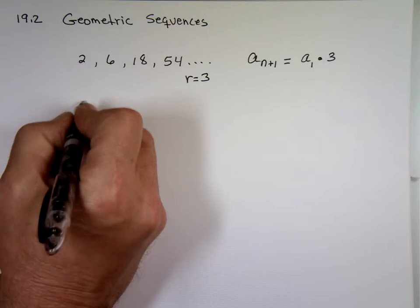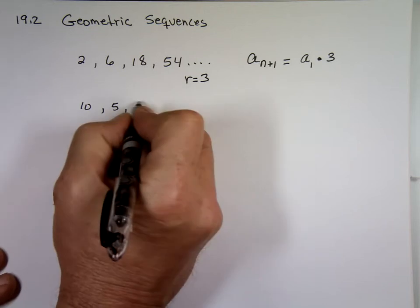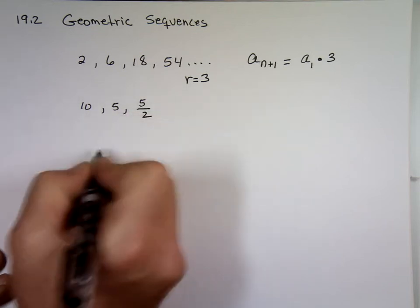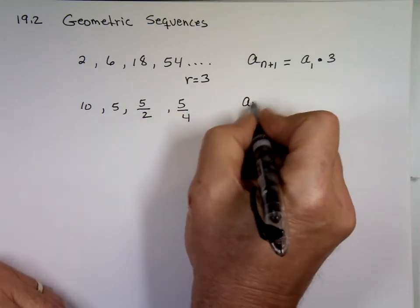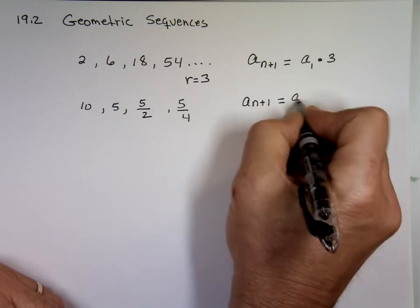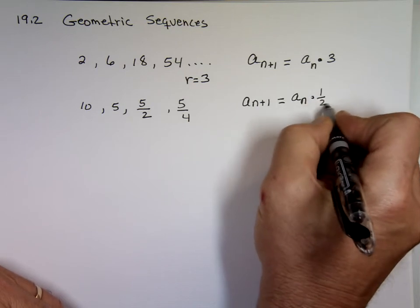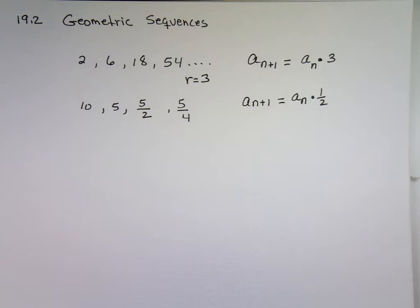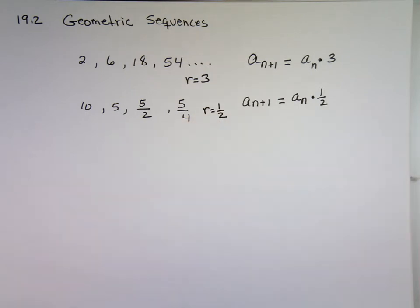Or you might have ten, five, five over two, five over four. What do you notice here? It's the first number, well, nth number, I shouldn't say the first one. The nth number times one half or divided by two. Same thing, you can say dividing by two or multiplying by a half. If you're dividing, is R going to be negative or no? No. R is one half here. So you can always just use multiplication. Yep, because dividing by two is the same as multiplying by a half.